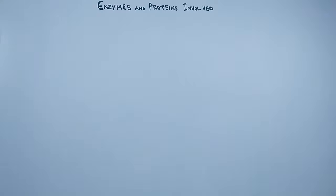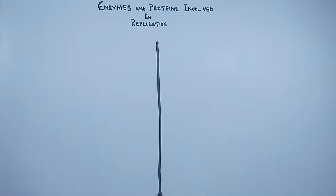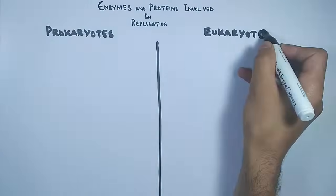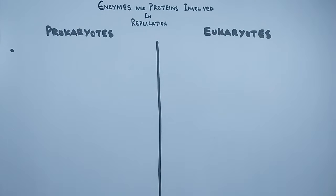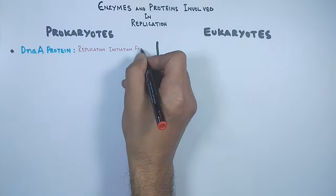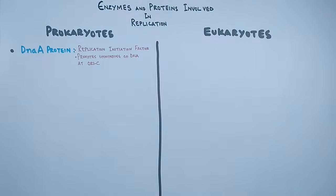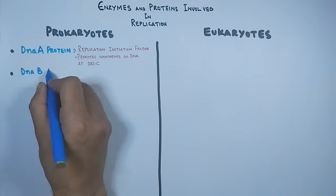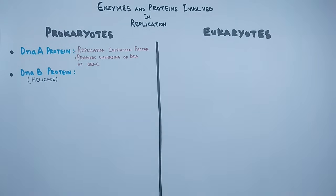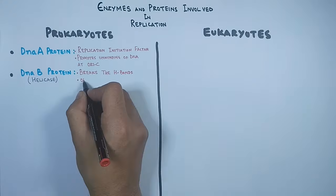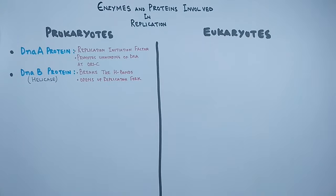Now let's discuss the enzymes and proteins involved in the DNA replication process in both prokaryotes and eukaryotes. First, in prokaryotes we have DnaA protein — it is a replication initiation factor that promotes the unwinding of DNA at the oriC site. With the binding of DnaA protein, the two strands will unwind. Then there is DnaB protein, which is a helicase enzyme that breaks the hydrogen bonds between strands and opens up a replication fork.